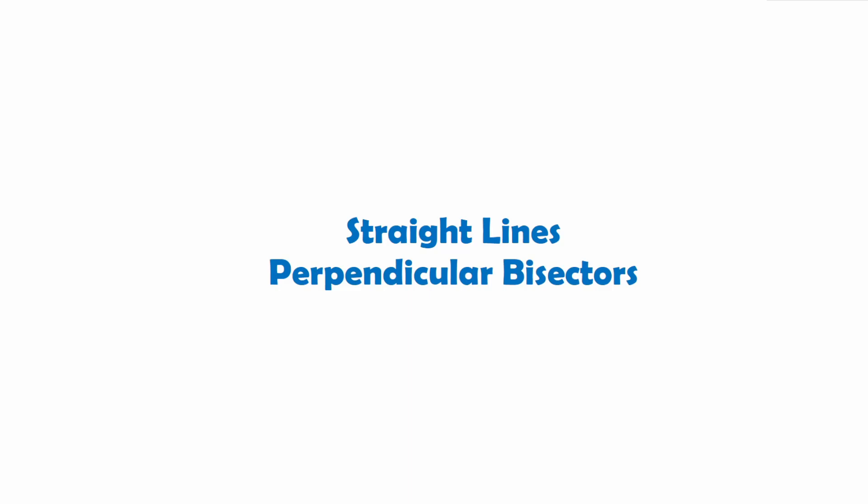Hello and welcome back to another higher mathematics video. Today we're going to be continuing our topic on straight lines, and in particular we're going to be looking at another type of straight line especially within triangles. This line is called a perpendicular bisector.